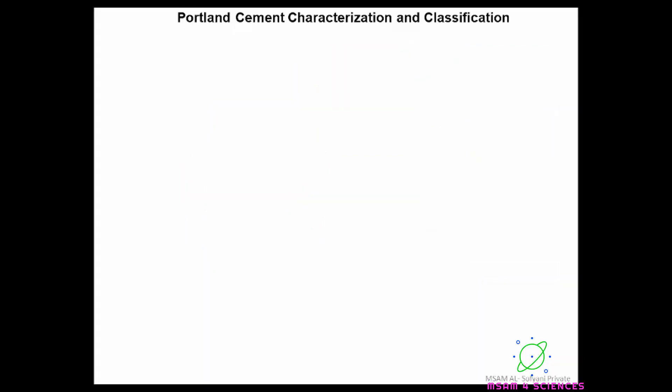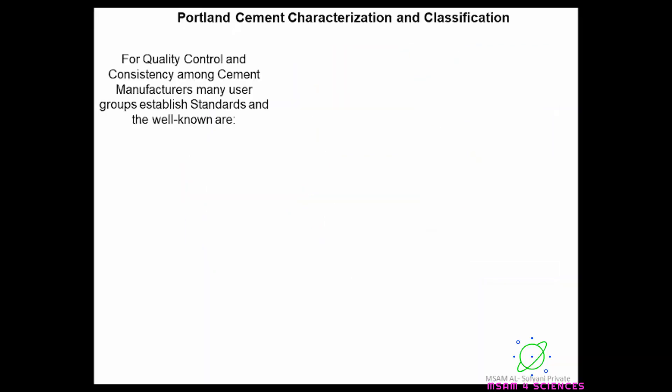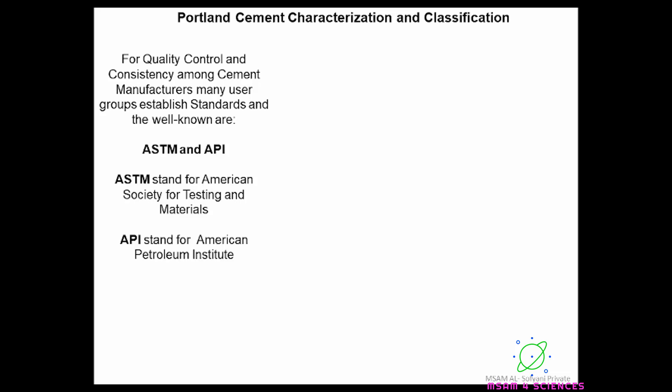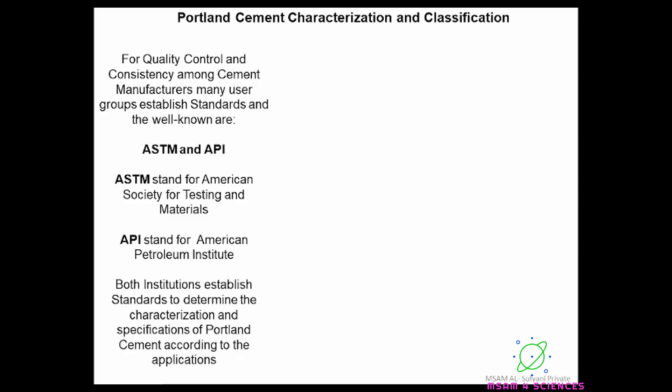Portland cement characterization and classification. For quality control and consistency among cement manufacturers, many users have established standards — the well known are ASTM and API. ASTM stands for American Society for Testing and Materials, and API stands for American Petroleum Institute. Both institutions established standards to determine the characterization and specification of Portland cement according to their application.